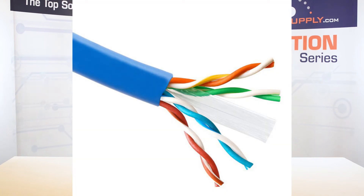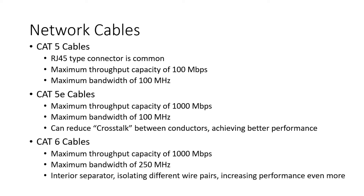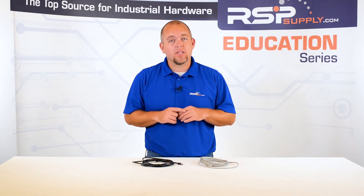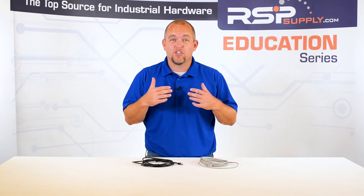CAT6 network cables have some improvements over both CAT5E and CAT5 cables. First, they have fast throughput speeds, much like the CAT5E cable, at up to 1000 Mbps, or 1 Gbps. However, CAT6 cables also offer improved bandwidth of up to 250 MHz. CAT6 cable also has an interior separator that isolates the different pairs of wires, which further reduces crosstalk, or noise, between the different signals. CAT6 is more commonly intended for commercial and industrial network applications, but is now finding its way into residential applications more and more.